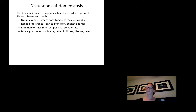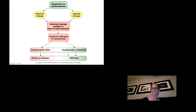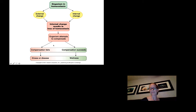The optimal range is where the body and cells can still function most efficiently. The range of tolerance is where they can still function but it is not optimal. Past the range of tolerance — above the maximum or below the minimum — is when illness, disease, and death can occur. When homeostasis compensation succeeds, the body is healthy. When homeostasis fails, illness or disease occurs. Please take some time to review and take notes, and let me know if you have any questions.